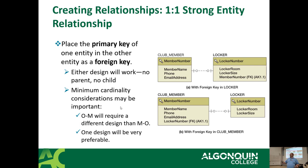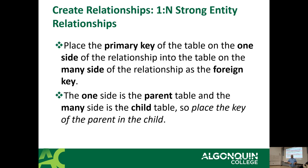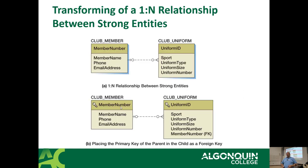For a one-to-many relationship between strong entities: the primary key on the one side belongs to the foreign key on the many side — the parent key gets fed to the child. In the conceptual diagram, when this is converted to physical, the member number is added as a foreign key in the Club Uniform table. So when creating two strong entities in a one-to-many, the member number attribute here becomes a column in the child table as a foreign key — that is the inter-relational constraint.